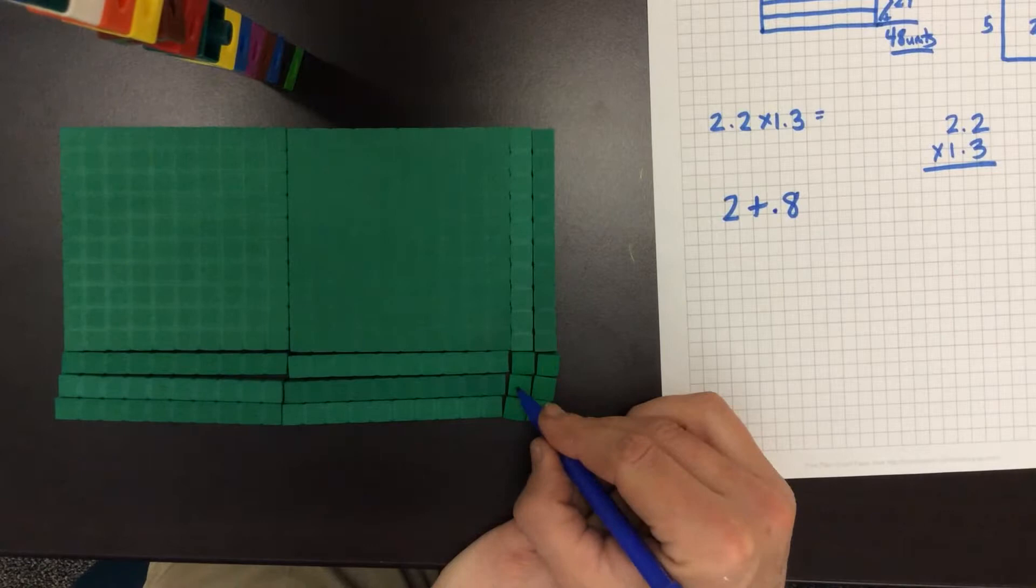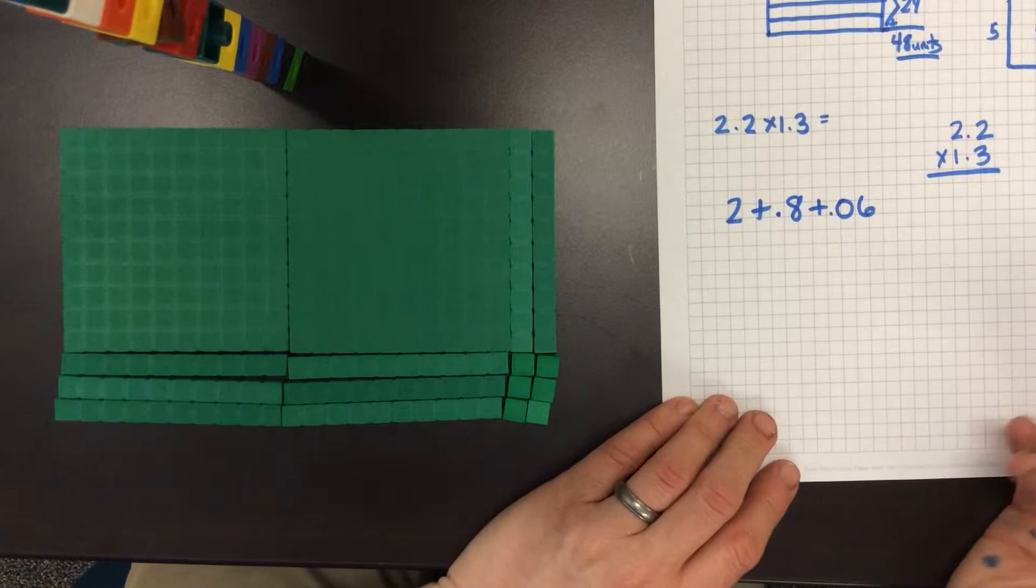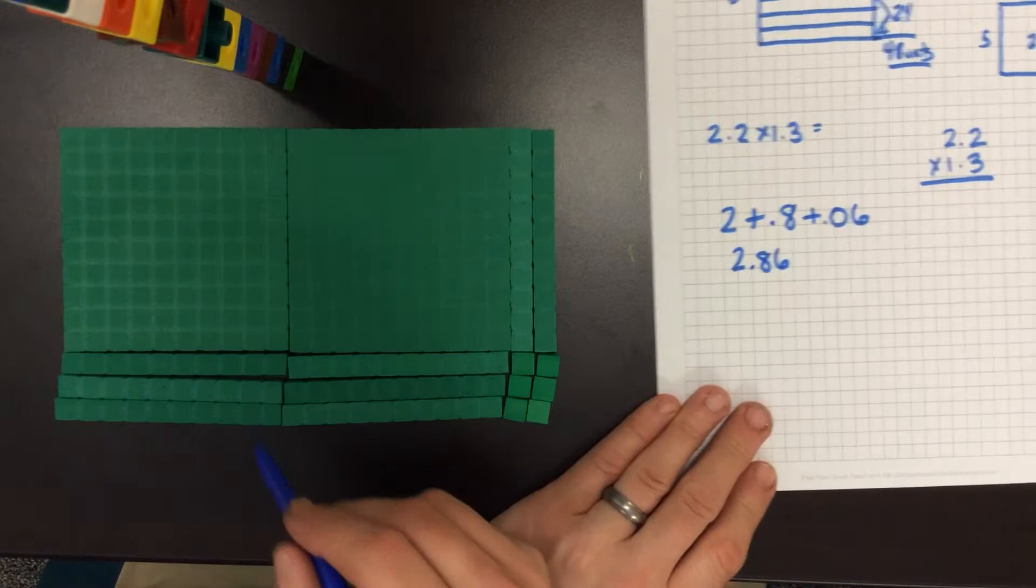And we have six hundredths. And we've learned expanded notation already in fifth grade in that first trimester. So when we add those up we get 2.86, which is what represents in this model.